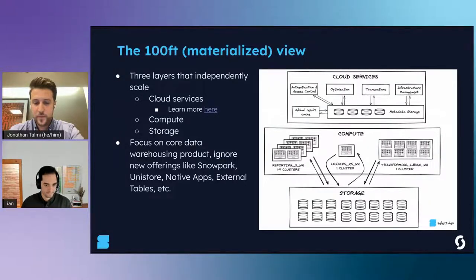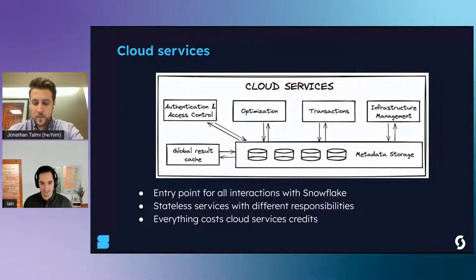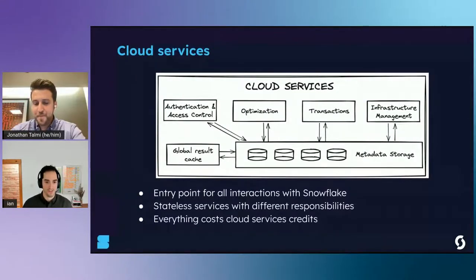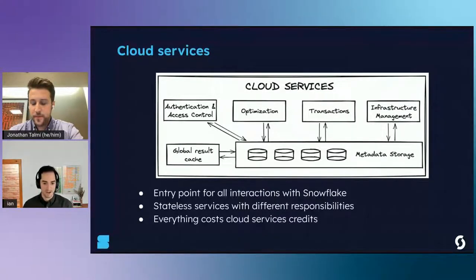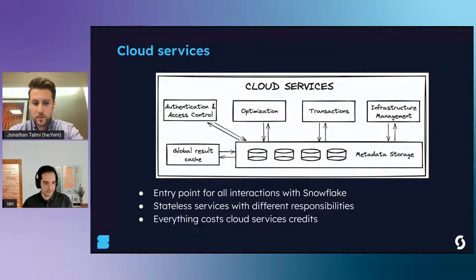The first layer is cloud services, which is the entry point for every interaction you'll have with Snowflake. It consists of stateless services that perform critical roles like authentication and access control, query optimization, infrastructure management, and housing the global result cache. Everything you do in Snowflake will incur cloud service credits, though these are usually very small. You only get charged for them if your cloud service credits exceed 10% of your daily compute credits.